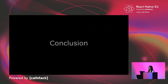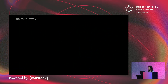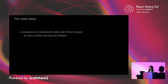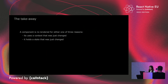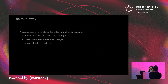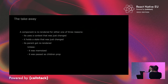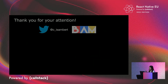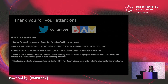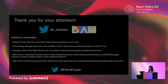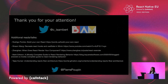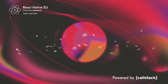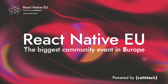Here is our takeaway. A component is going to get rendered for either one of three reasons: either it uses a context that was just changed, or it holds a state that was just changed, or its parent got rendered — unless it was memoized, unless it was passed as children prop, or unless you're instantiating it outside the parent scope. Thank you so much for your attention. If this subject got you interested, here are some resources to go further. And here is Pierre's Twitter account for his unexpected yet significant contribution to this talk. This was my mental model of React's rendering behavior — take it with you and build amazing apps.